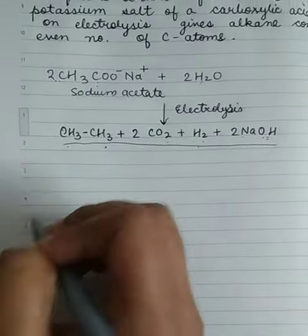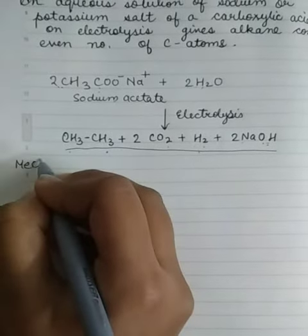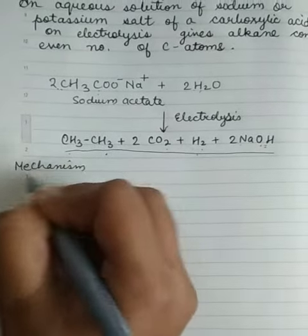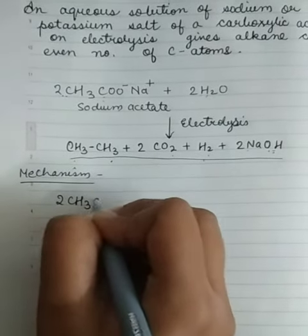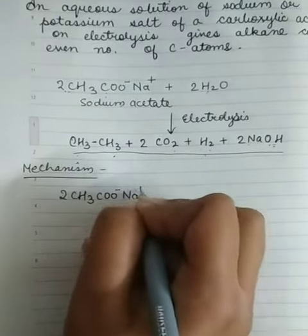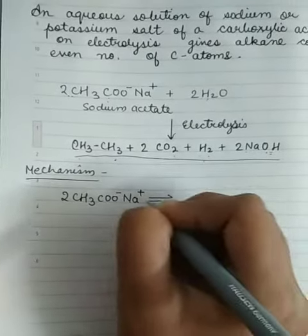Now we will go through the mechanism. I will explain you the mechanism of Kolbe's electrolytic method. First if you take two moles of CH3COO minus Na plus, this is a reversible reaction.